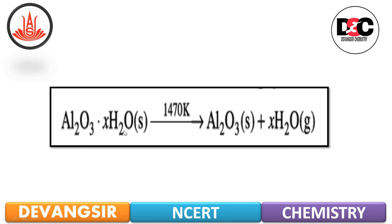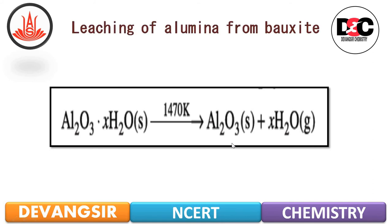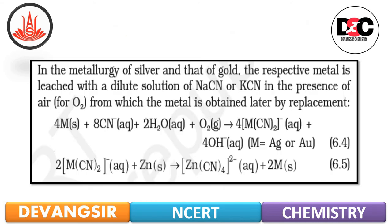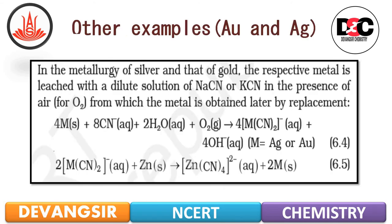Then Al2O3·XH2O, on heating at 1470 Kelvin temperature, liberates water molecules and gives Al2O3 in solid form. So this is the technique of leaching of alumina from the bauxite ore.